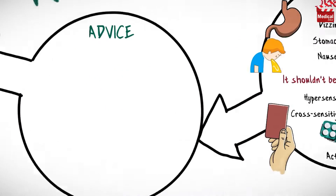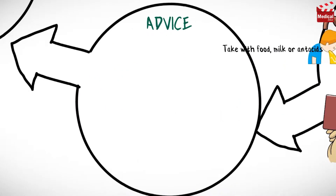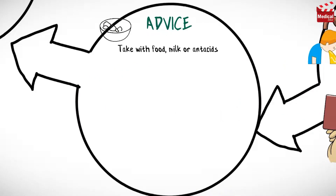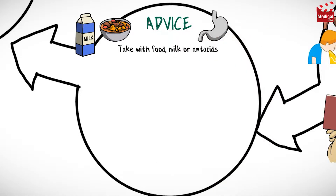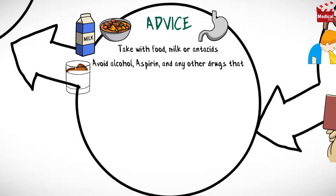Take aceclofenac with food, milk, or antacids if gastrointestinal upset occurs, and inform your physician if stomach distress continues. Avoid alcohol, aspirin, and any other medications that cause gastrointestinal irritation and bleeding.